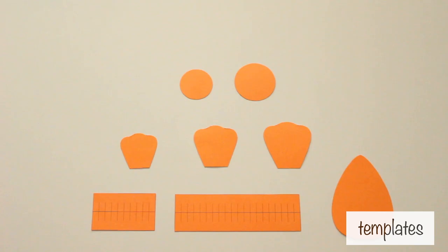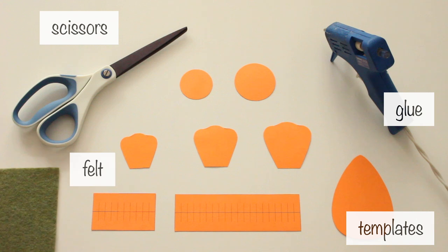For supplies, you'll need templates, hot glue, scissors, and felt in the colors olive, grey, sandstone, ruby, and antique white.